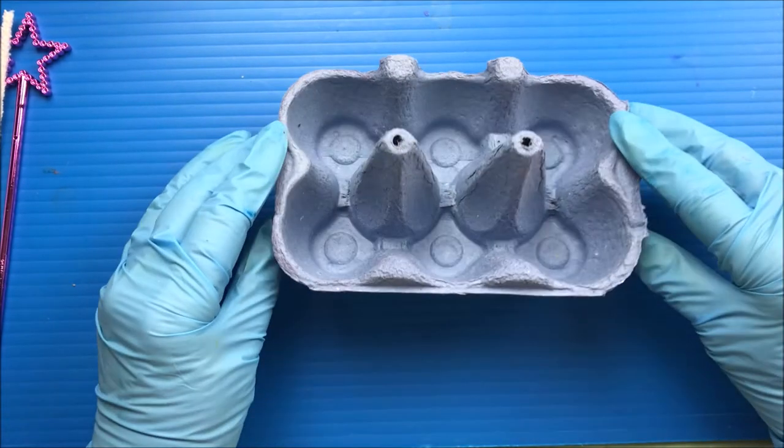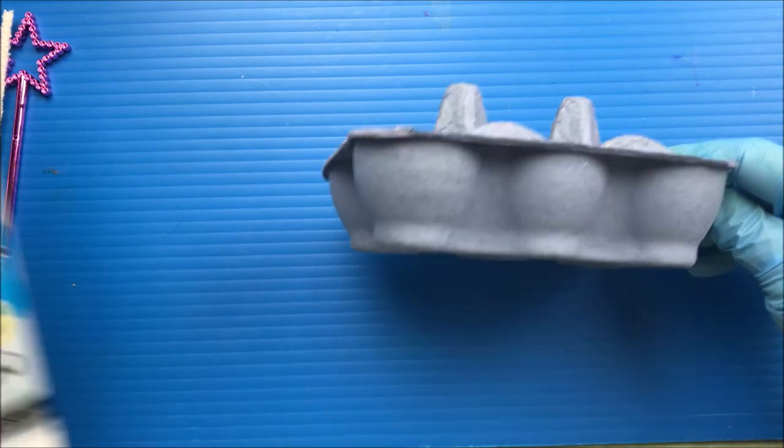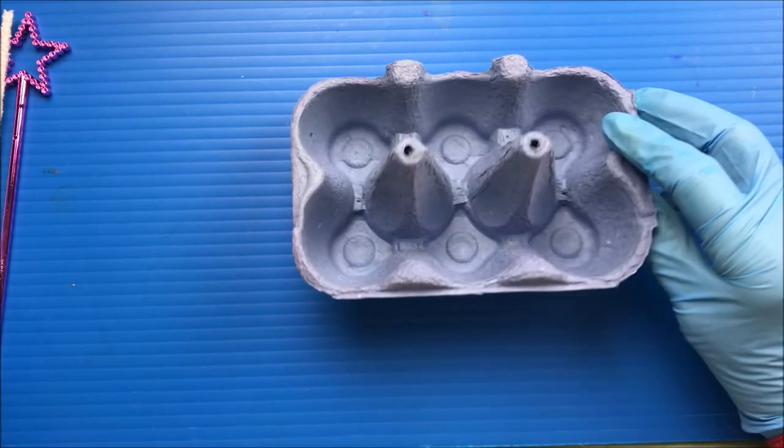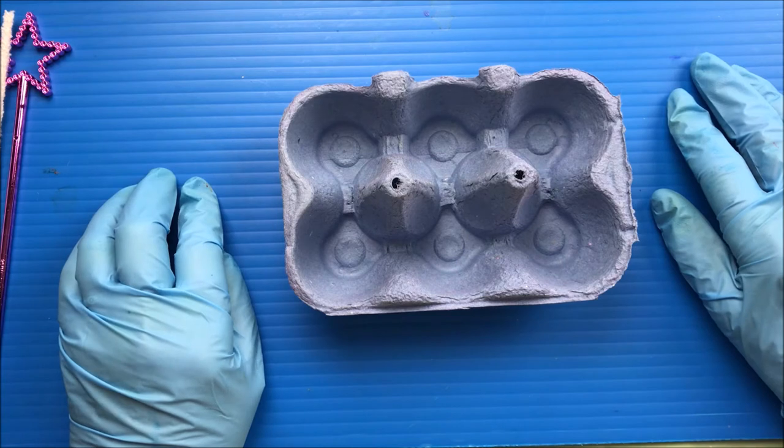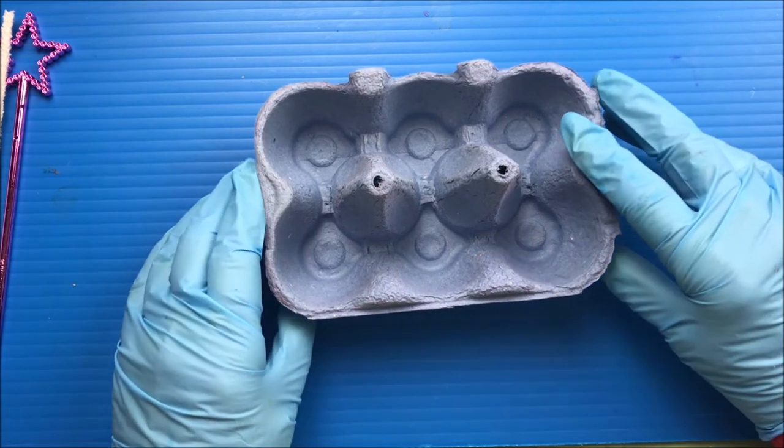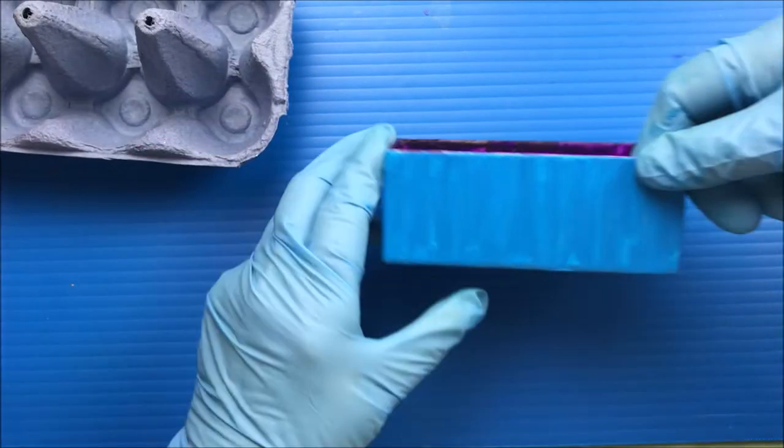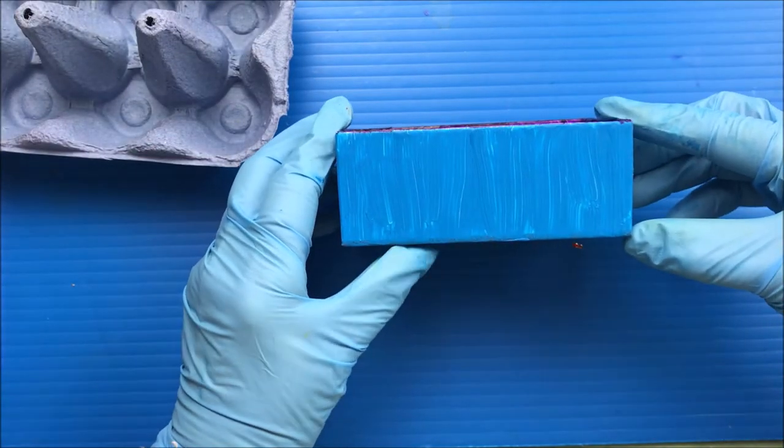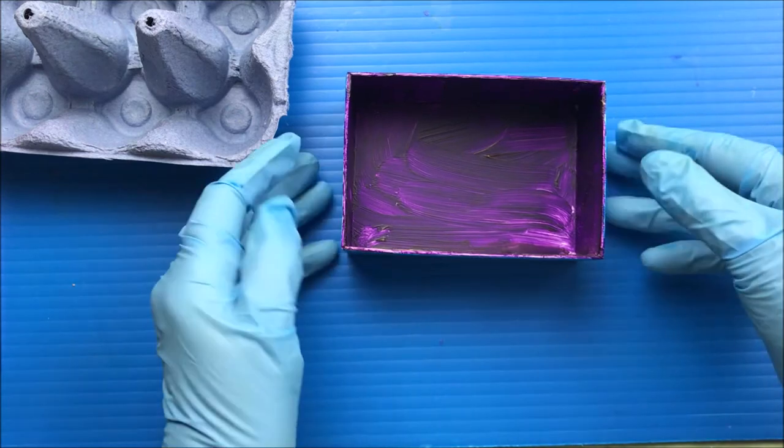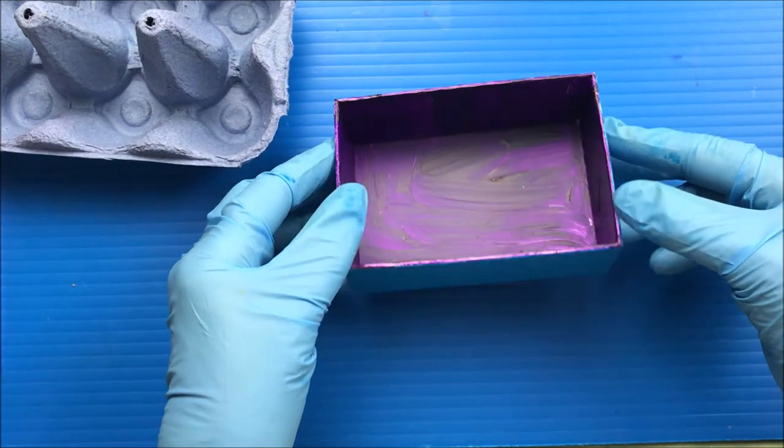The useful thing about the acrylic paint or the household paint is that it does make it waterproof. And then you can stick things on the outside of that. This is a little box I've already started, so I've painted acrylic on the outside and the inside, and then I'm going to stick things on.